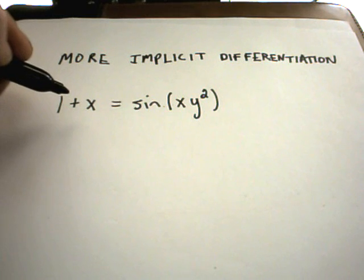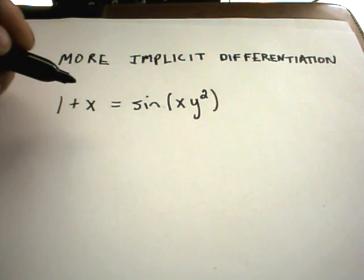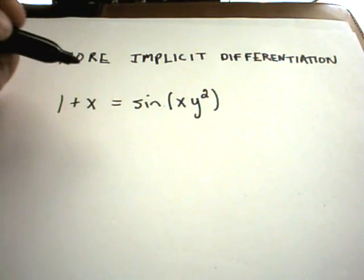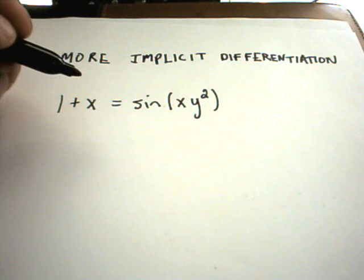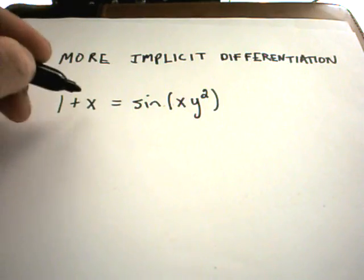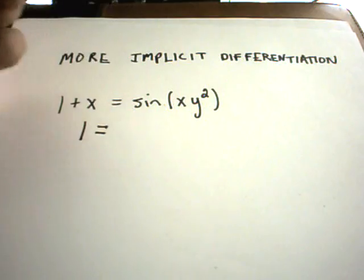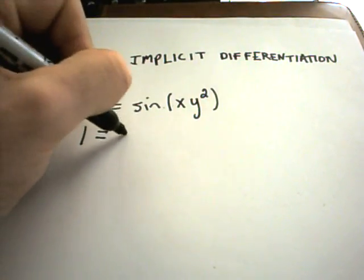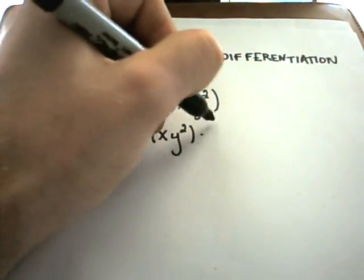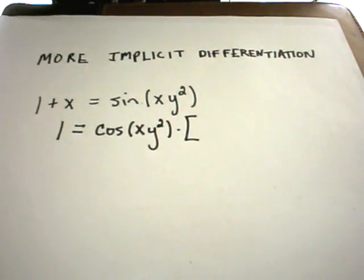So, we're taking the derivative with respect to x of both sides. What makes this an implicit differentiation problem is the fact that we have our x's and y's jumbled up on the same side. If we take the derivative on the left side, the derivative of 1 is 0, the derivative of x is 1. We'll have to use the chain rule along with the product rule on the right hand side. So, the derivative of sine is cosine.